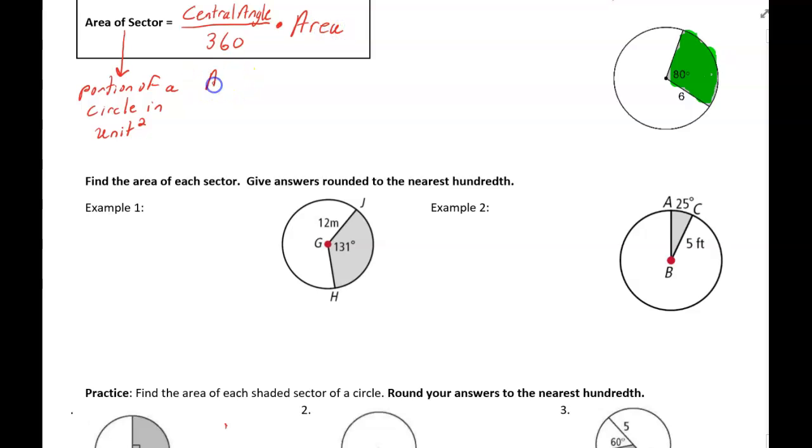And we know the area is given by the formula pi r squared. So the area of a sector, if you're looking for the formula, is equal to the central angle over 360 times pi r squared.